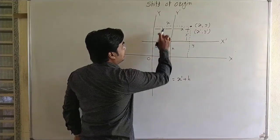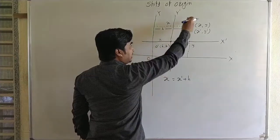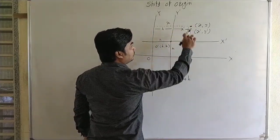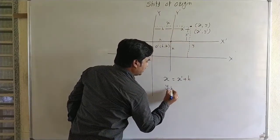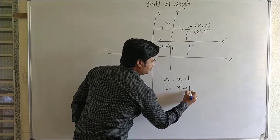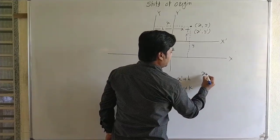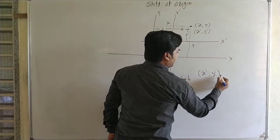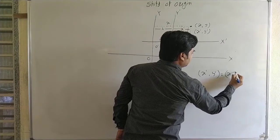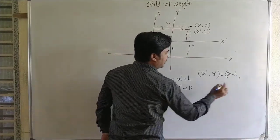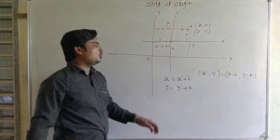The total distance is x, therefore x equals h plus x-dash. The total distance in the y-direction is y, therefore y equals y-dash plus k. So y equals y-dash plus k. Therefore the new coordinates x-dash comma y-dash can be written as: x-dash equals x minus h, and y-dash equals y minus k.